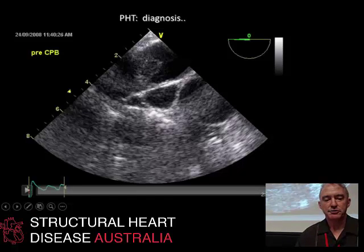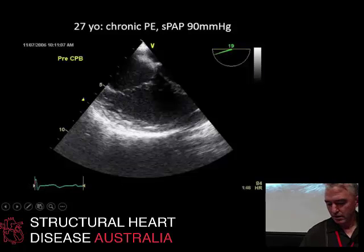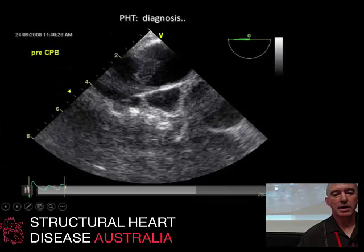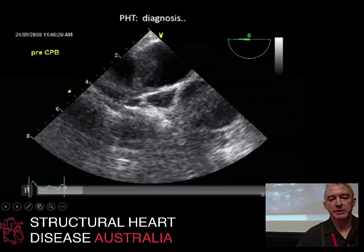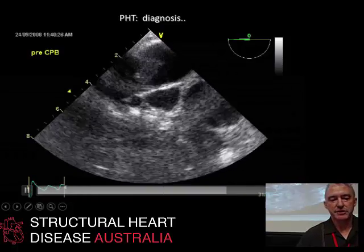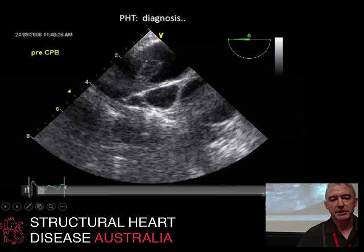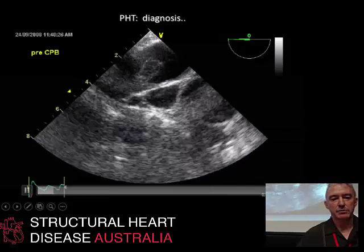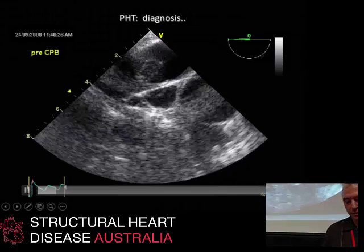Here's a rather unusual case — a patient that presented with acute massive pulmonary embolus. This is a basal view of the pulmonary artery on transoesophageal echo. This is the aorta, the superior vena cava, and this is the right pulmonary artery here — with a big fat embolus sitting very proximally occluding that vessel. You don't see that very often.